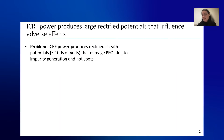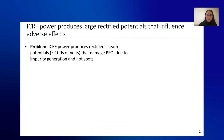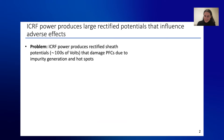There is a negative side effect to ICRF, which is the production of large rectified potentials on plasma-facing components, which can be on the order of hundreds of volts. This is problematic because you can have hot spots and impurity generation on your materials, which is a bad thing for a tokamak reactor.